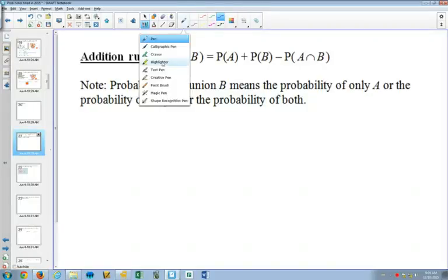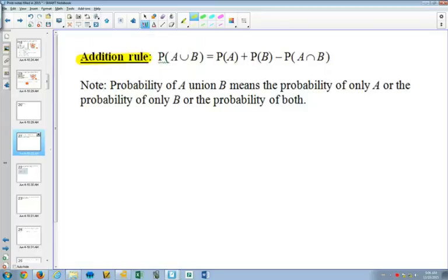So our first probability formula, the addition rule. And this really makes sense if we think about Venn diagrams.